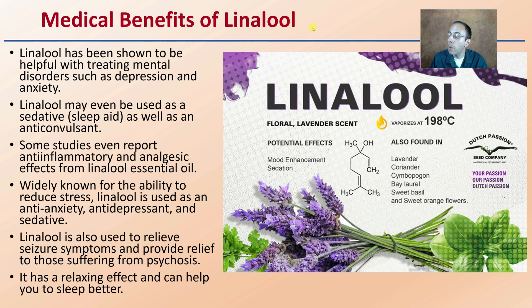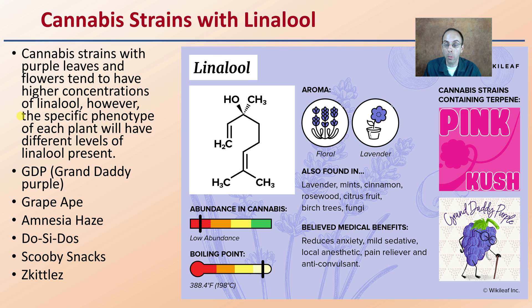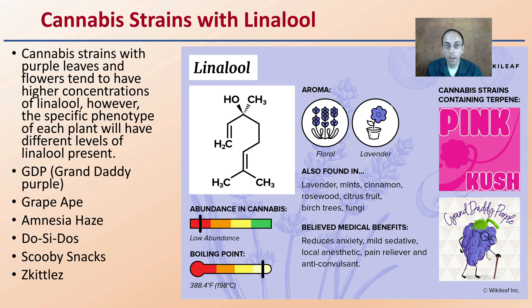If you're looking at potentially where to find linalool, this gives you a general idea of some strains that might have this terpene in higher concentration. Cannabis strains with purple leaves and flowers tend to have higher concentrations of linalool; however, the specific phenotype of each plant will have different levels present, so it's always good to get a test done. Anthocyanins is another plant pigment that's produced, and we notice a lot of purple coloration associated with this terpene — so if you're seeing higher anthocyanin production and more purple leaves, there's a chance it will also have a higher concentration of linalool.